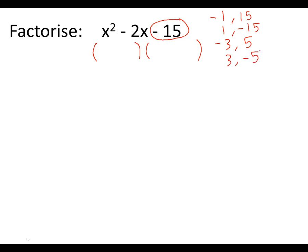Now the question says minus 2x. So we need to pick one of these pairs that adds together to make minus 2x. So we're going to pick 3 and minus 5 because 3 plus minus 5 gives us minus 2x. So in our brackets goes x plus 3 and x minus 5.